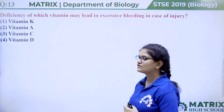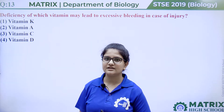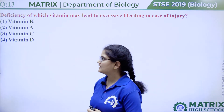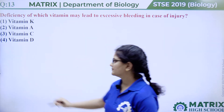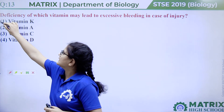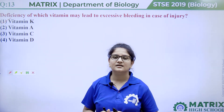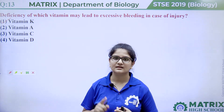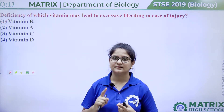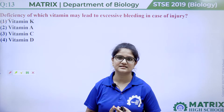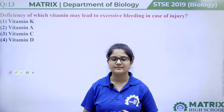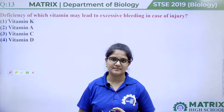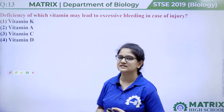Question number thirteen: deficiency of which vitamin may lead to excessive bleeding in case of injury? Options are Vitamin K, Vitamin A, Vitamin C, or Vitamin D. The answer is Vitamin K. Vitamin K helps in the clotting of blood. If there is a deficiency of Vitamin K, clotting will not take place and blood will continue to flow after injury. Vitamin A causes night blindness, Vitamin C causes scurvy, and Vitamin D causes rickets.